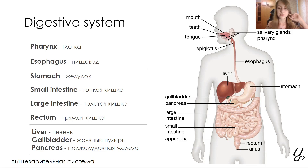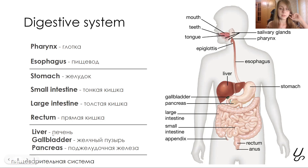The esophagus leads to the stomach. After that you can see the small intestine, then the large intestine. Then all the masses come through the rectum and through the anus. We should also know the accessory digestive organs: the liver, gallbladder, and pancreas.